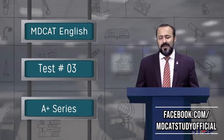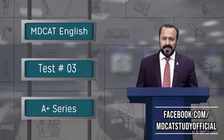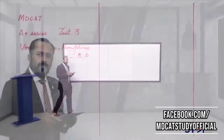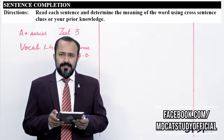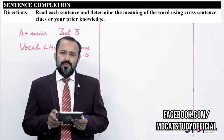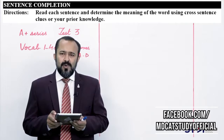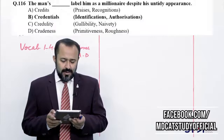Bismillahirrahmanirrahim. Assalamu alaikum dear students. I am Professor Moeenul Hasan and today I am going to discuss with you MDCAT A Plus Series Test No. 3. So let us start the discussion of the test. We will discuss this test — it is A Plus Series Test No. 3. This is UHS Word List, vocabulary words 1 to 40, and this is homophones A to D questions.